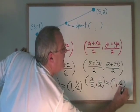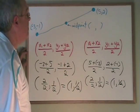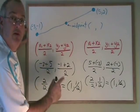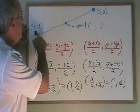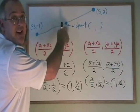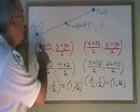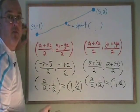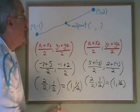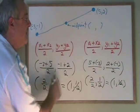1 comma 1 half are the coordinates of the midpoint. Therefore, we know when we're using the midpoint formula, because the distance from the start to the midpoint is the same as the distance from the end to the midpoint, it doesn't matter which of these two points you call the start and which one you call the end. You can do the formula either way, and you will get the same answer.